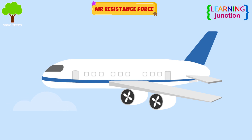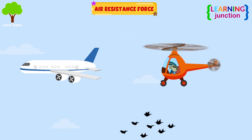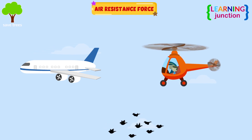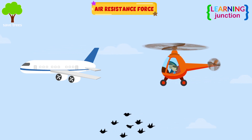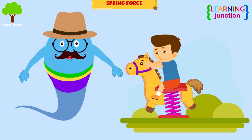Air resistance force. This is a type of force that acts in the opposite direction to an object moving through the air. Airplanes, helicopters, and birds are all examples of objects that regularly encounter air resistance.